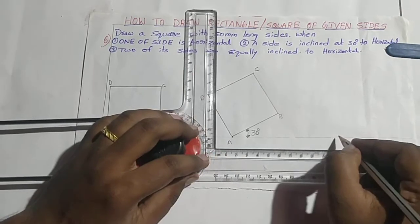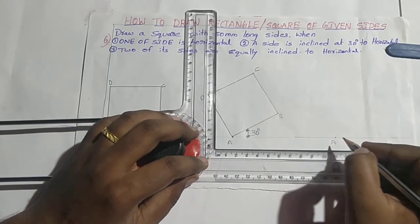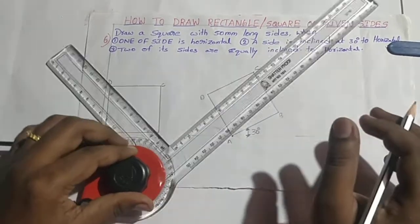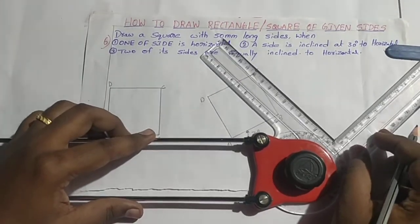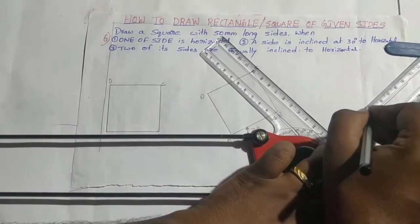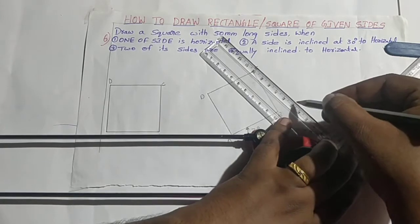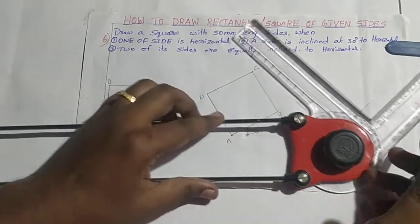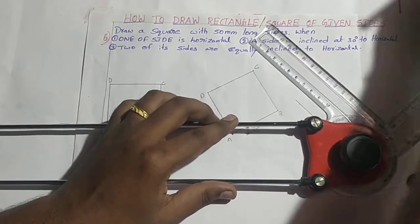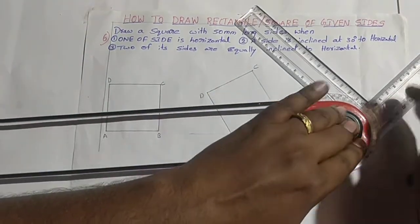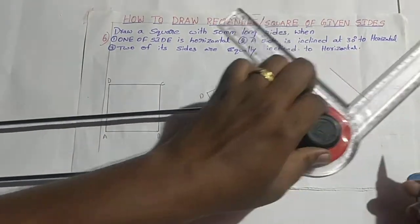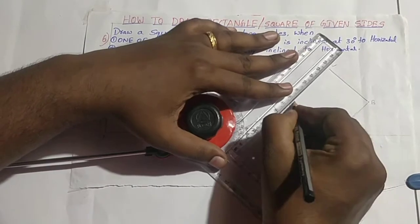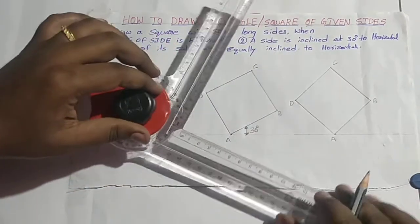I am drawing one reference line and taking one point, named A. Next, draw a line making an angle of 45 degrees with length 50 mm. Similarly on the opposite side also. Next, move the drafter and draw another line. We get points A, B, C, and D. Join C and D — and that completes the square.